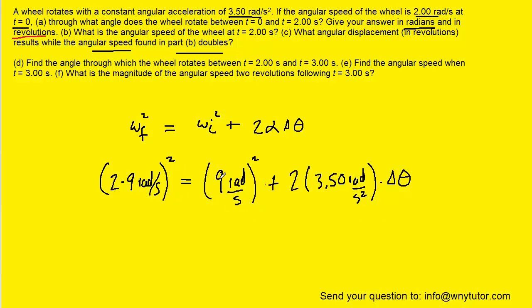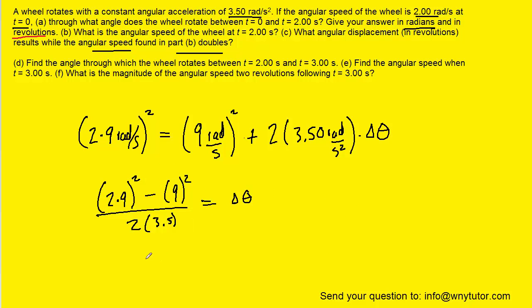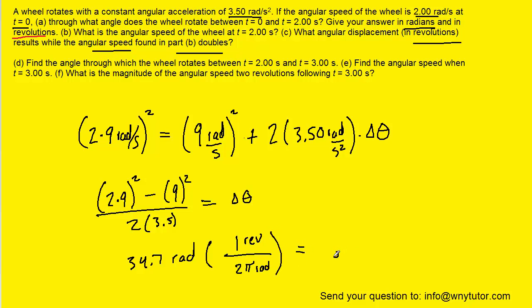We square both quantities, subtract the nine squared term and divide by two times 3.5. When we crunch that down, we get approximately 34.7 radians. The question wants the answer in revolutions again, and using one revolution equals two pi radians, we end up with 5.52 revolutions. So 5.52 revolutions is the correct answer to part C.